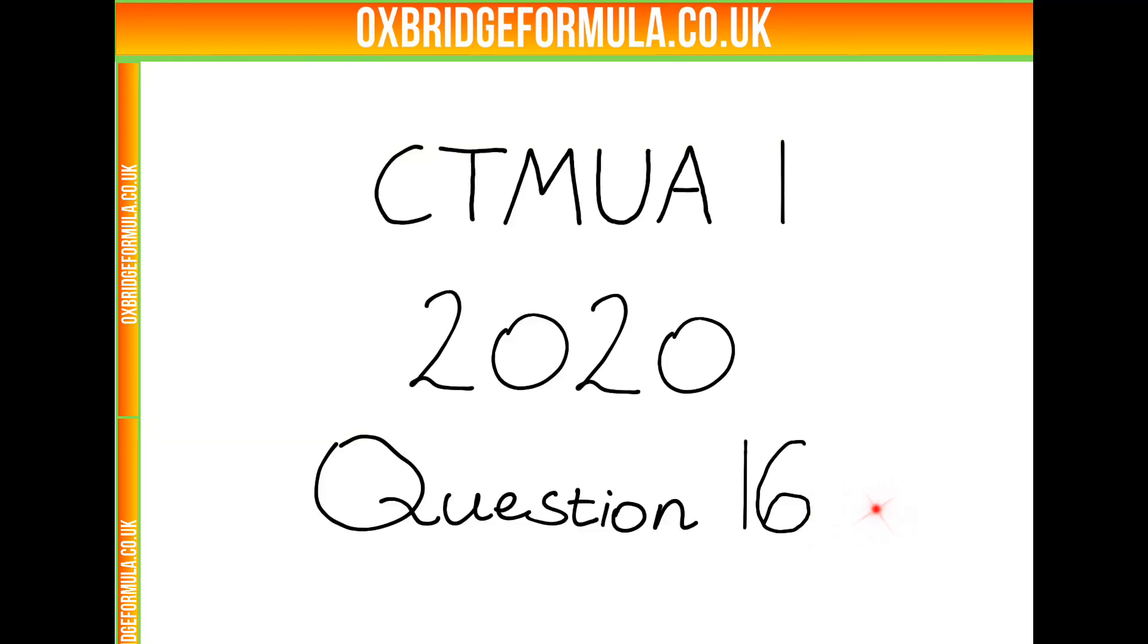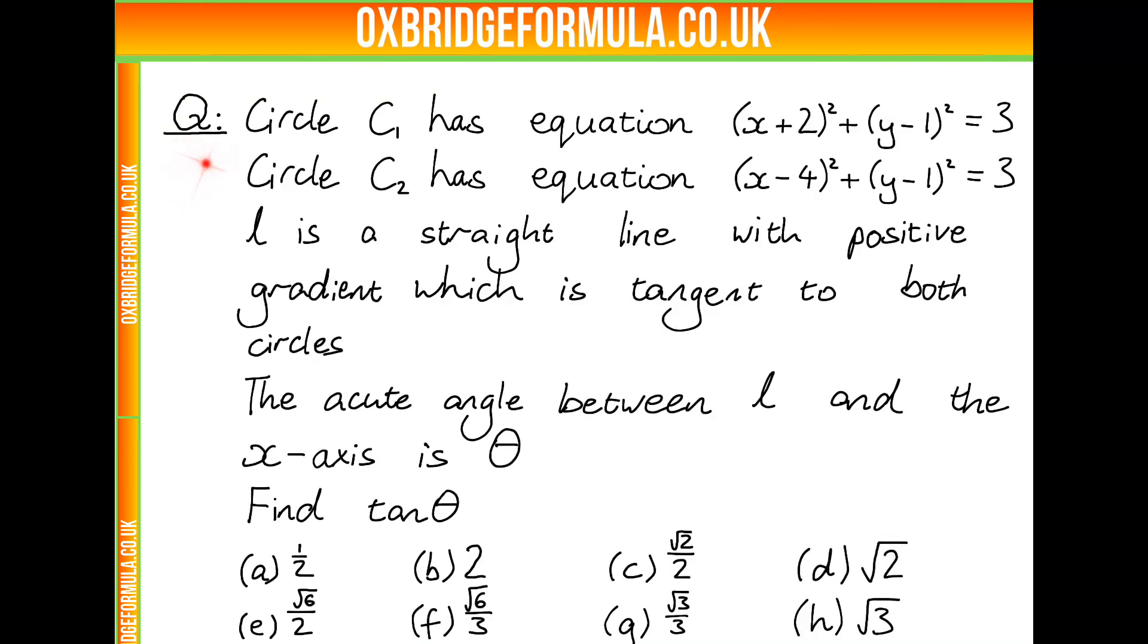Welcome to question 16 from the 2020 CTMUA paper 1. The question tells us that we have circle C1 with equation x plus 2 squared plus y minus 1 squared equals 3,